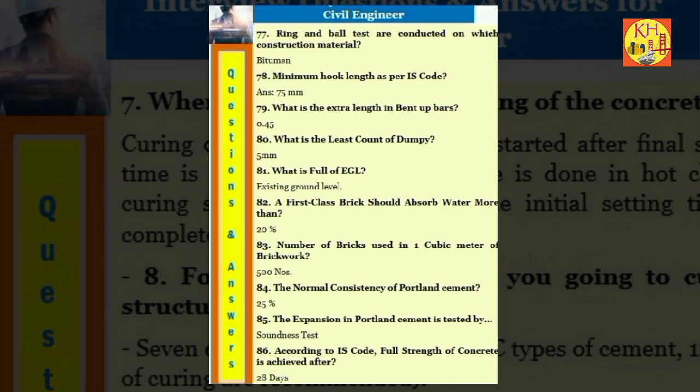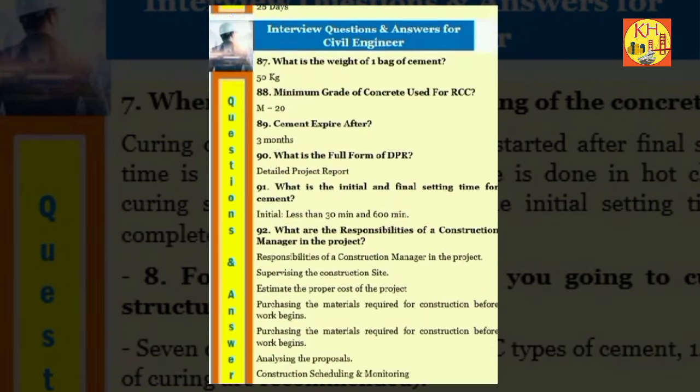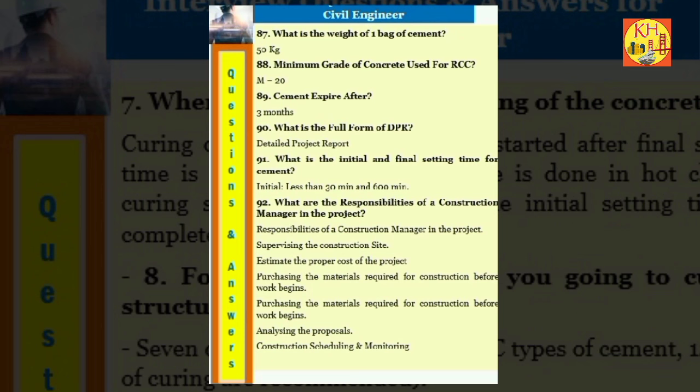Question 84: The normal consistency of Portland cement: 25%. Question 85: The expansion in Portland cement is tested by soundness test. Question 86: According to IS code, full strength of concrete is achieved after 28 days. Question 87: What is the volume of one bag of cement? 0.035 cubic meters. Question 88: Minimum grade of concrete used for RCC: M20. Question 89: Cement expire after 3 months. Question 90: What is the full form of DPR? Detailed project report. Question 91: What is the initial and final setting time for cement? Initial less than 30 minutes and 600 minutes.